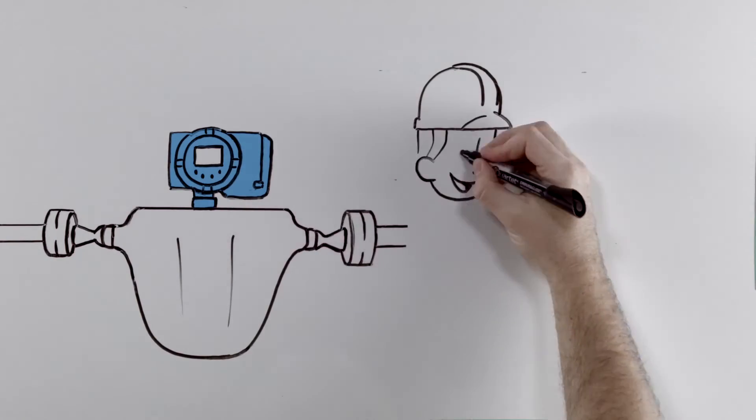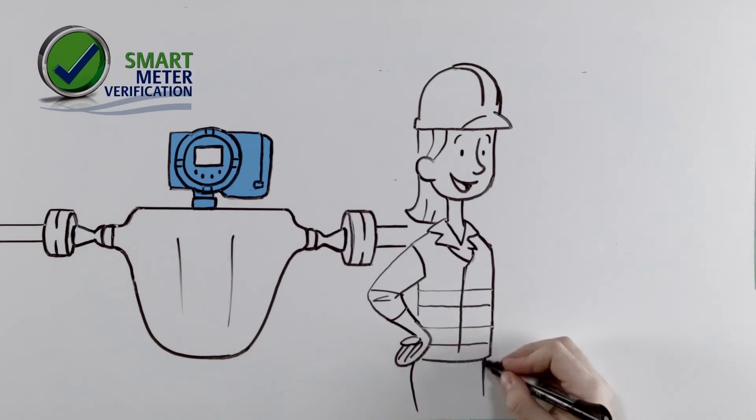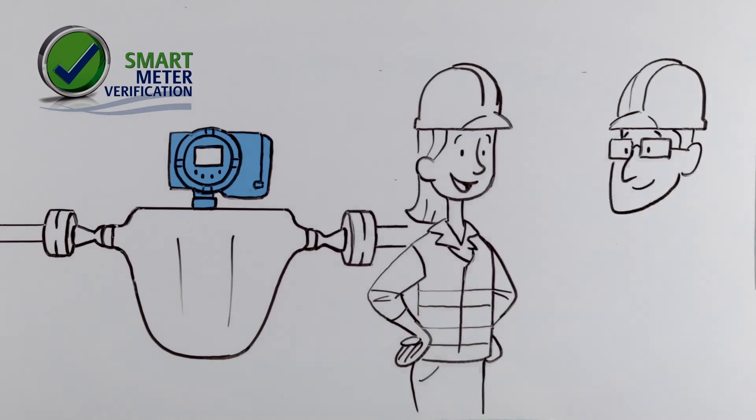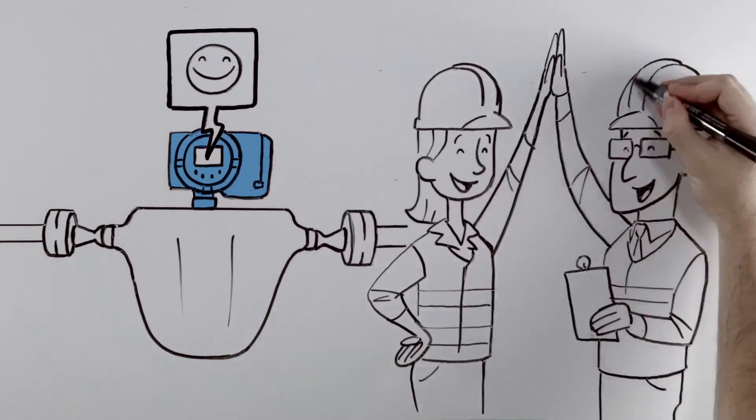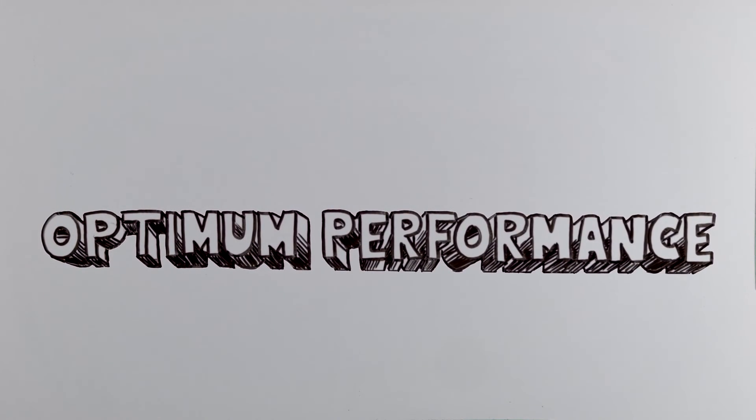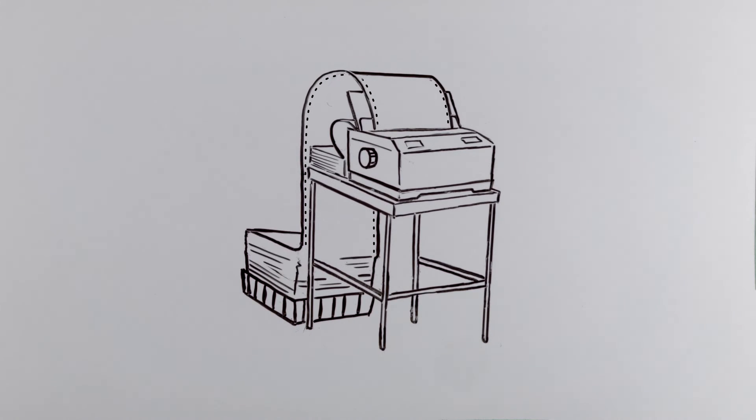Better yet, running this process along with smart meter verification, another micromotion diagnostic tool that checks the meter health, guarantees Tina her devices are always running at optimum performance. And both tools provide the paper trail Tina needs to prove it again and again.